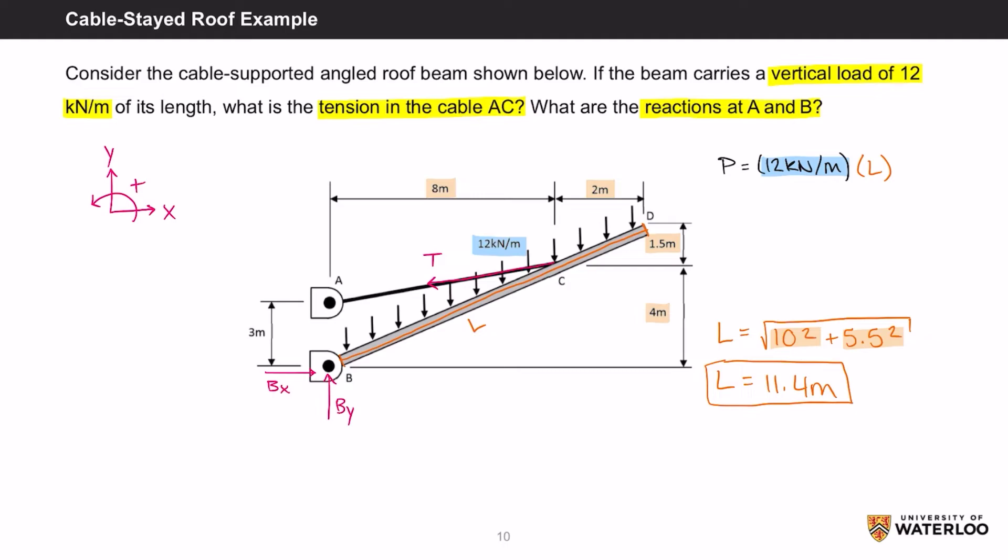We can finish solving for P. So P equals 12 kN per meter times 11.4 meters. This means that P equals 136.8 kN placed at the center of the horizontal distance, which is 5 meters.